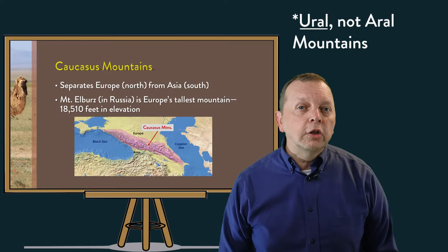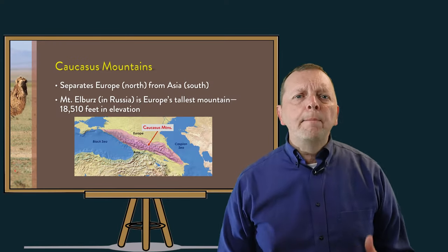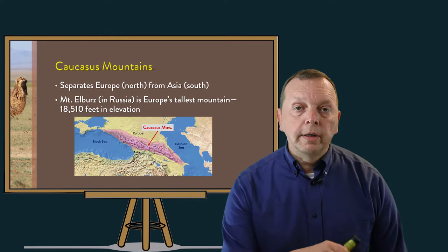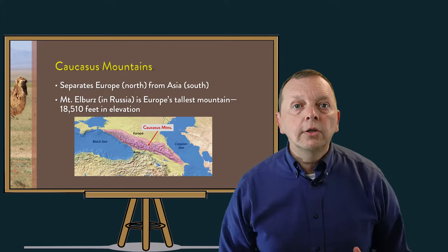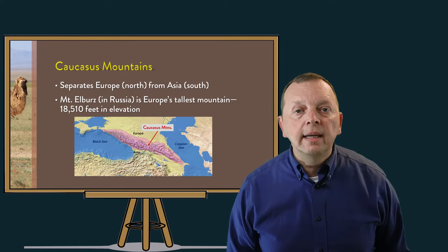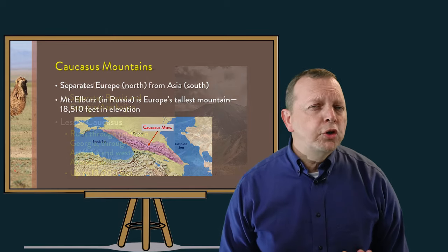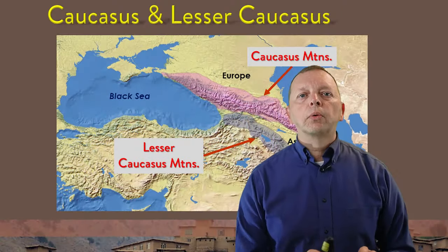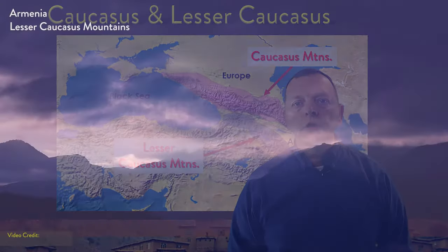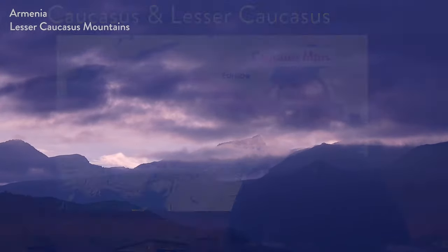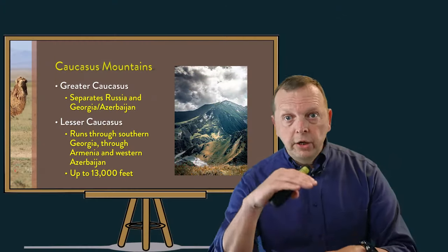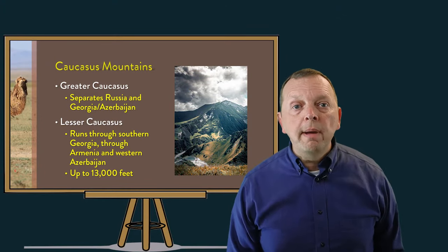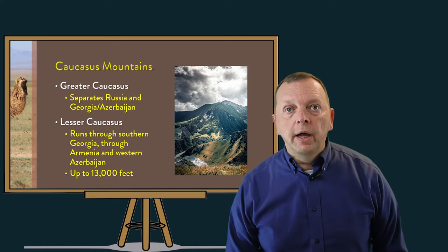Unlike the Ural Mountains, the Caucasus Mountains are significant mountains about the same height as the American Rockies. In fact, Mount Elbrus, which is found in the Caucasus Mountains in southern Russia, is the tallest mountain in Europe at 18,510 feet. The Caucasus Mountains should not be confused with the Lesser Caucasus Mountains, which run further south through the countries of Armenia, Azerbaijan, and the southern portion of Georgia. While these are not as tall as their counterparts that separate Asia and Europe, the Lesser Caucasus are still rather significant mountains, reaching up to about 13,000 feet in elevation.